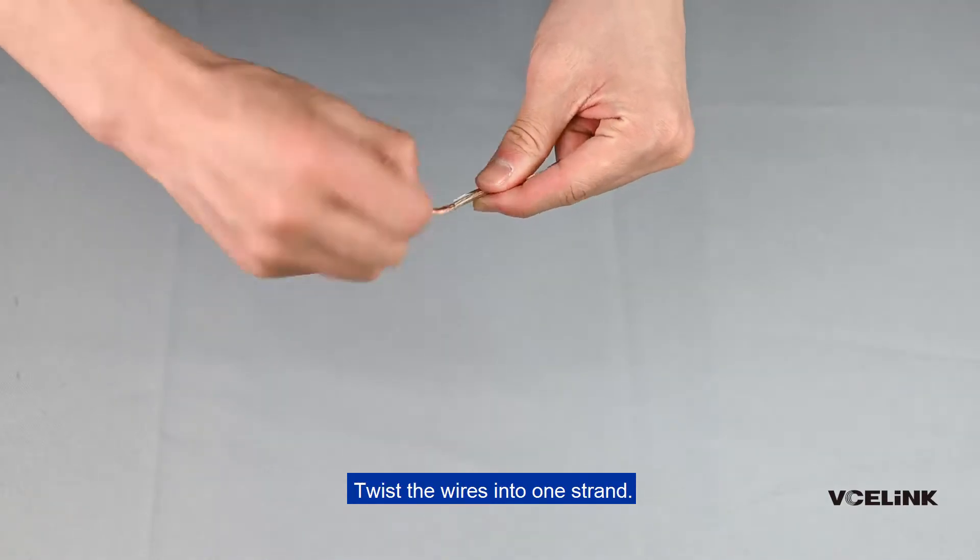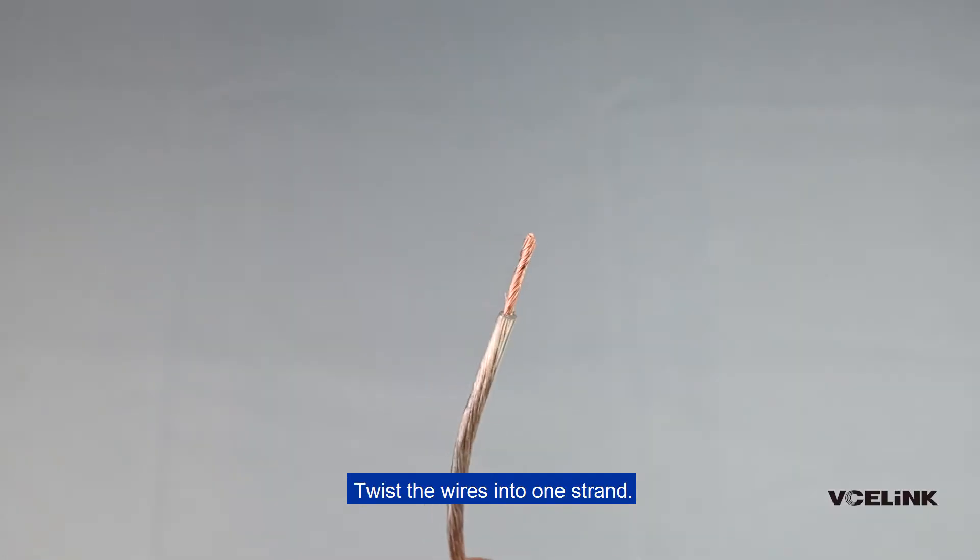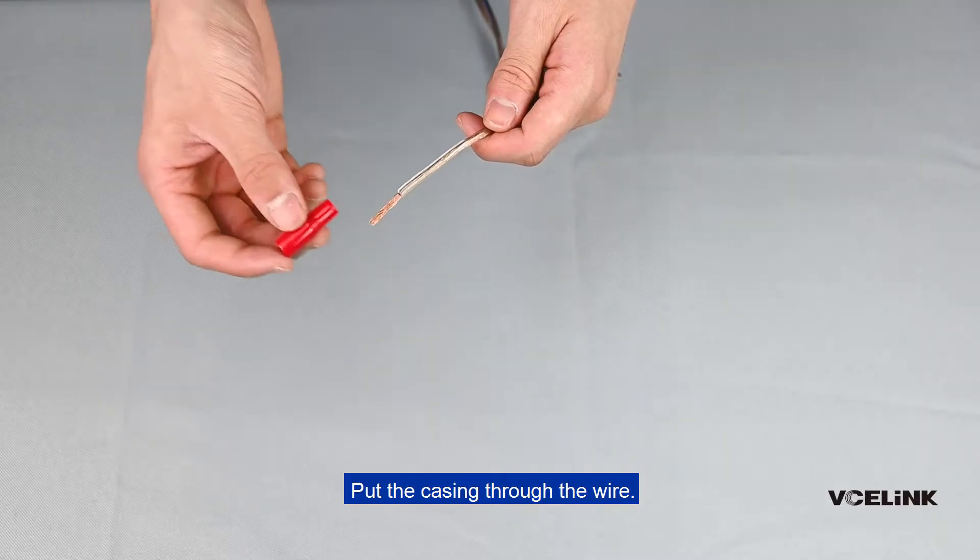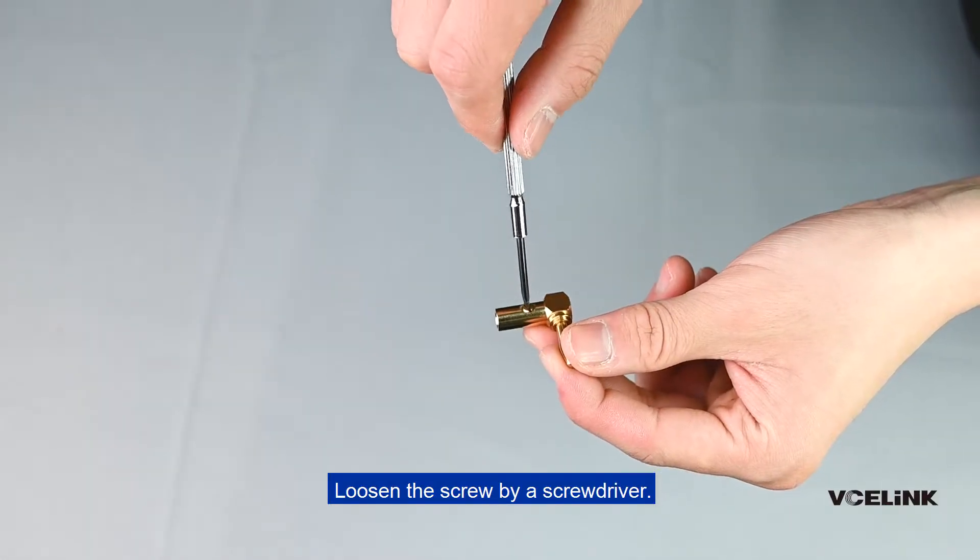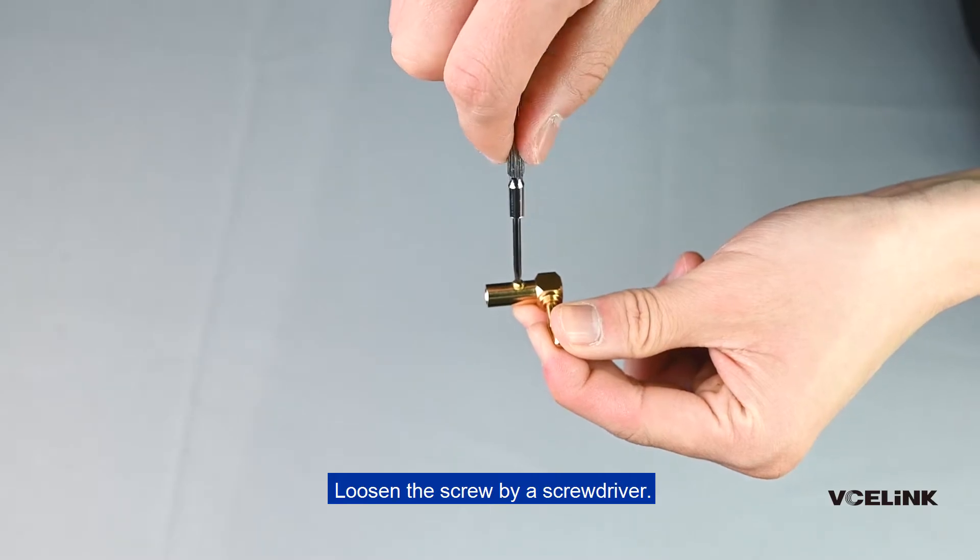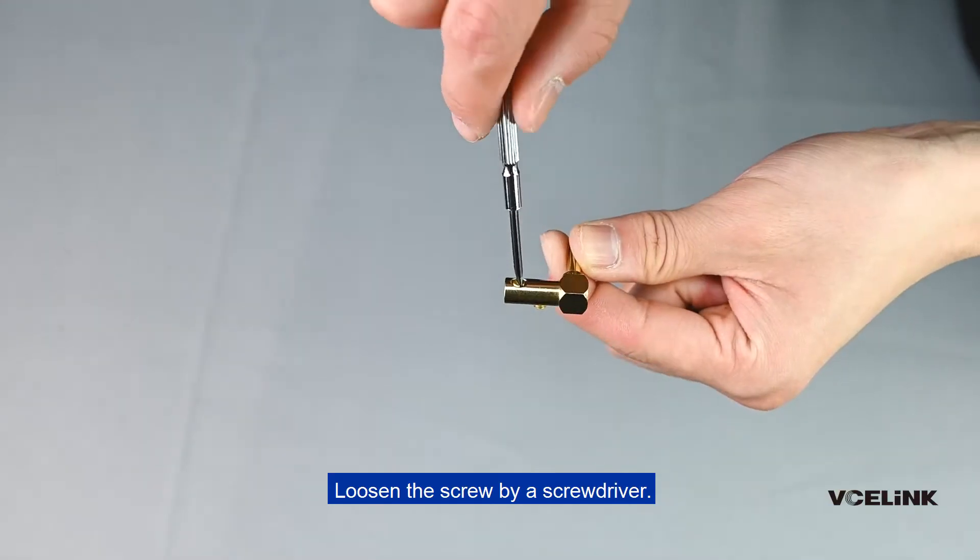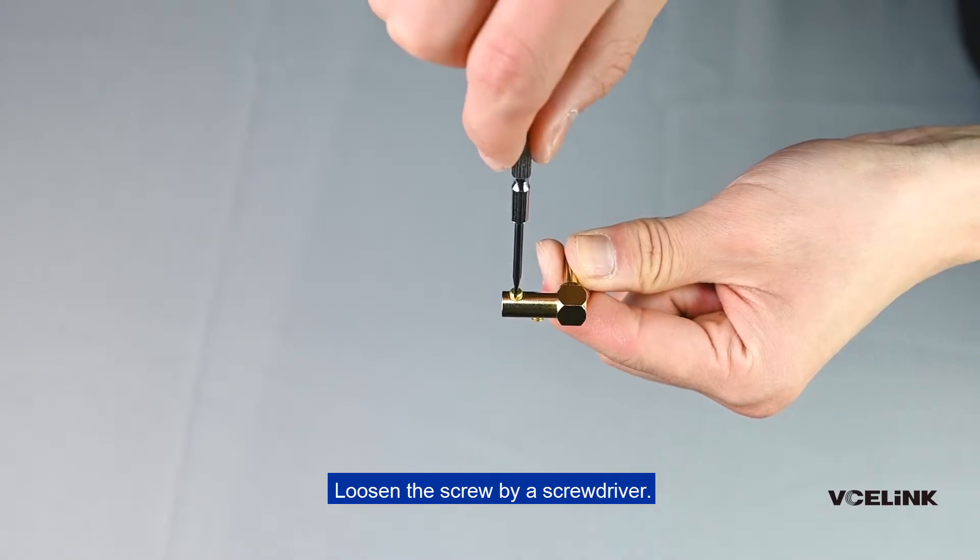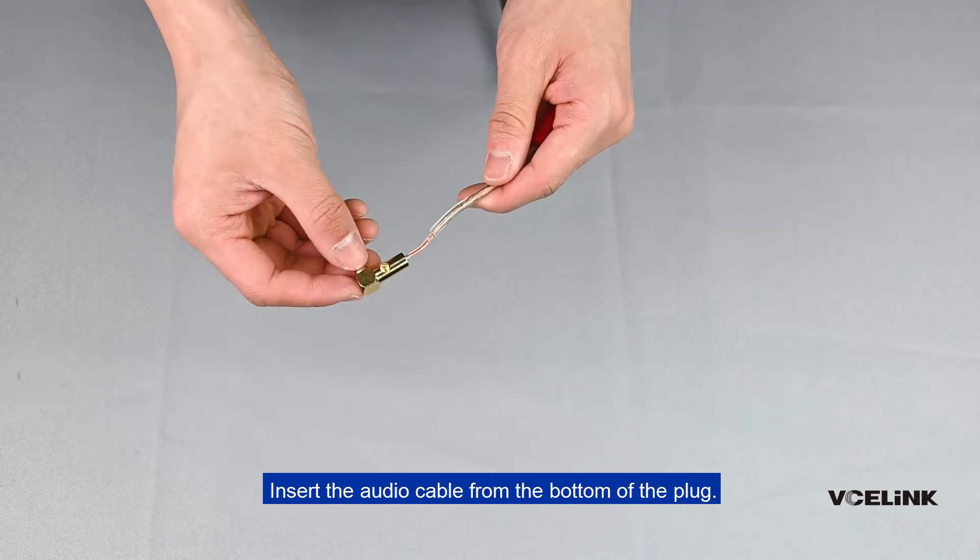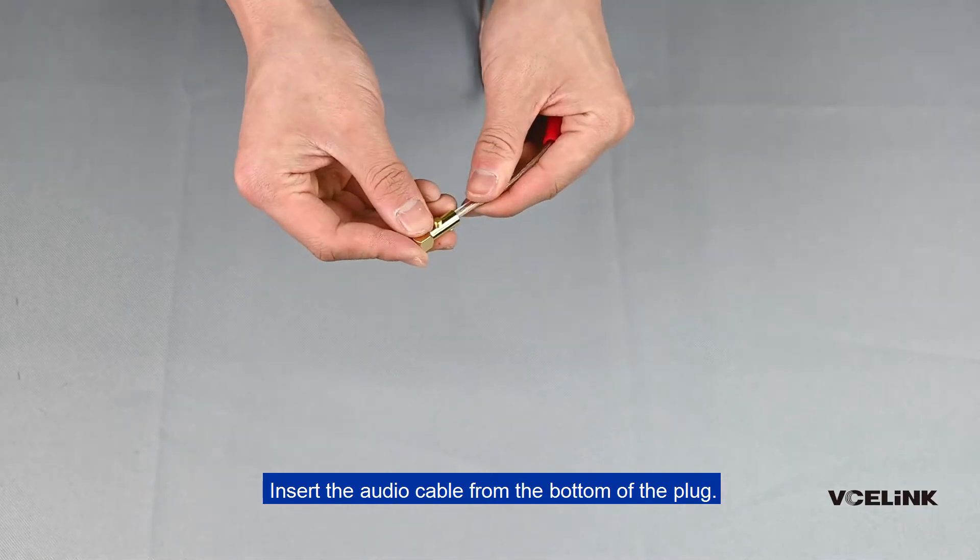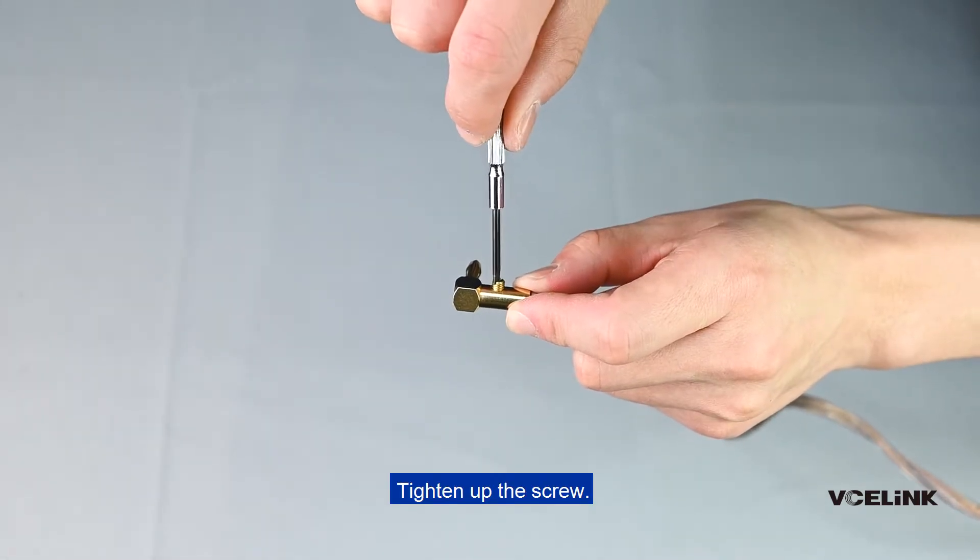Twist the wires into one strand. Put the casing through the wire. Loosen the screw with a screwdriver, insert the audio cable from the bottom of the plug, and tighten up the screw.